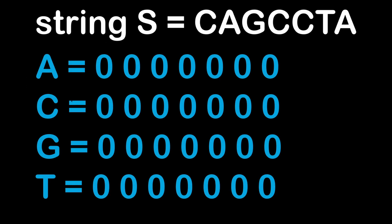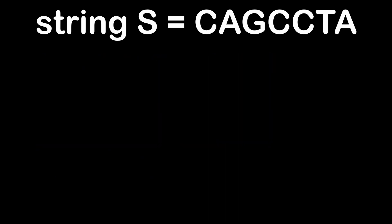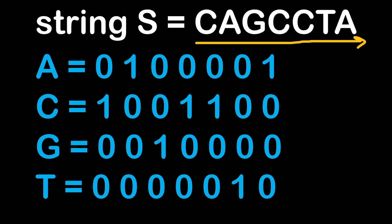A better way is to define four different arrays, one for each nucleotide, with the same size as the original string S. All the arrays are initialized at 0. Then we read the string characters and add 1 in each array at the same position where the corresponding letter occurs inside string S. This way, each array will hold the positions specific to each of the four nucleotides.